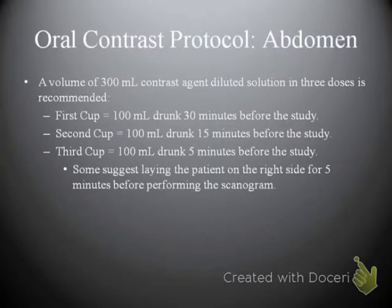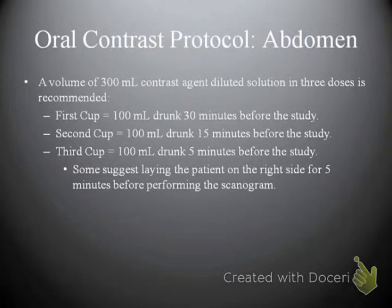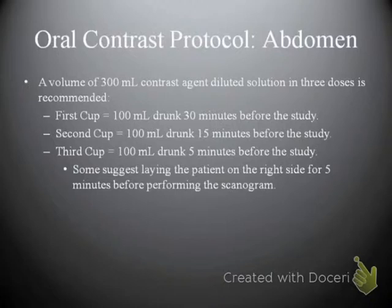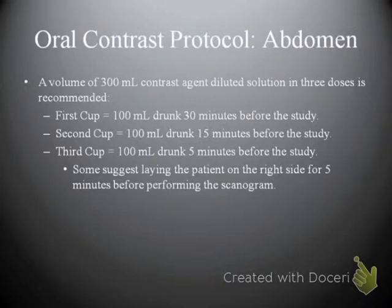For CT of the abdomen, the oral contrast protocol recommends 300 mL of diluted contrast agent in three 100 mL doses: the first drunk 30 minutes before the study, the second 15 minutes before, and the third 5 minutes before. Some suggest laying the patient on the right side briefly before the scanogram to assist gastric emptying. The speaker notes that 30 minutes is on the light side, and personally prefers waiting about an hour for adequate contrast distribution.